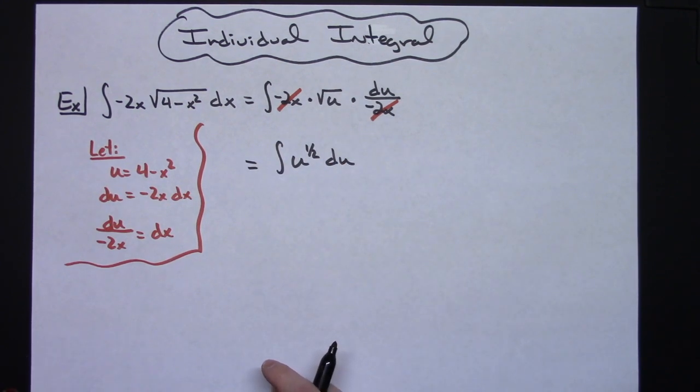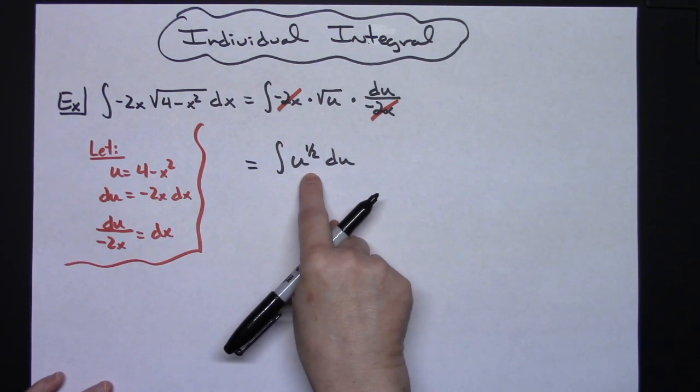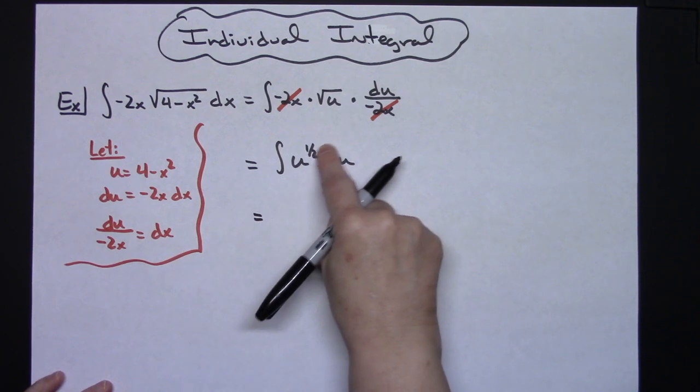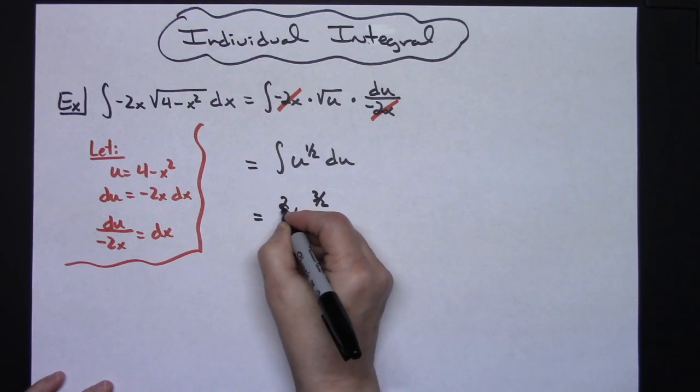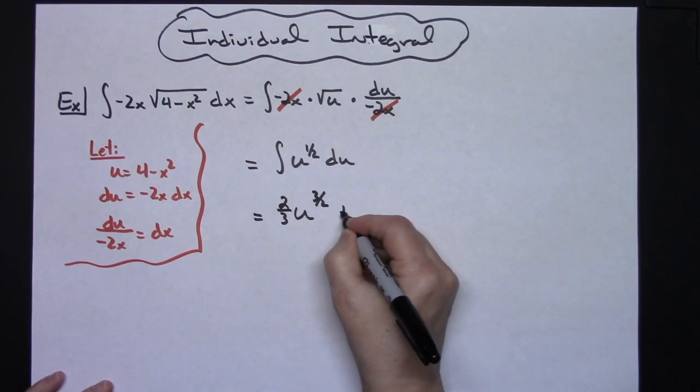And I can easily integrate the u to the 1 half. When I add one there I'll have u to the 3 halves and the reciprocal there in front of 2 thirds, and then plus C because I'm done with my integration.